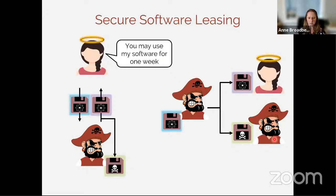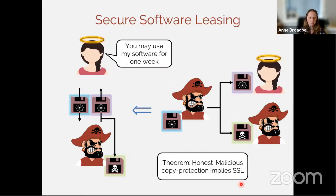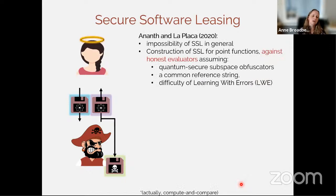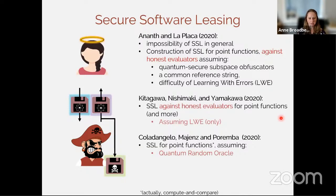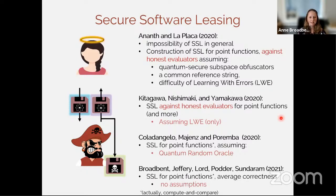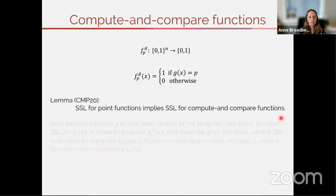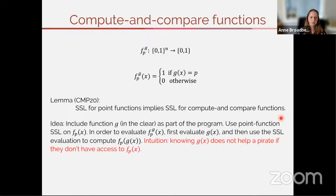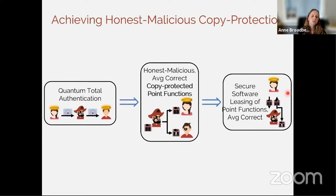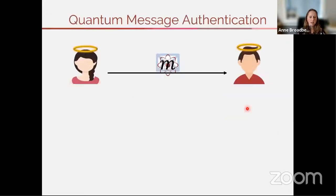We showed that honest-malicious copy protection implies secure software leasing — if we establish honest-malicious copy protection we automatically have software leasing schemes. Secure software leasing was initially proposed by Ananth and La Placa with this type of construction, and there's been quite a bit of follow-up work. To achieve honest-malicious copy protection, we're going to use quantum authentication, specifically quantum total authentication, and that implies secure software leasing by this correspondence.